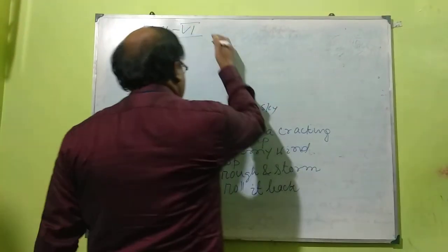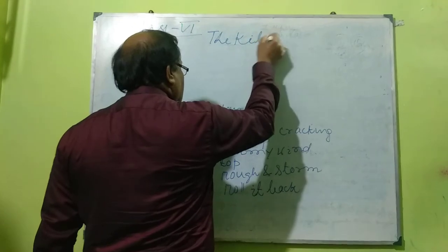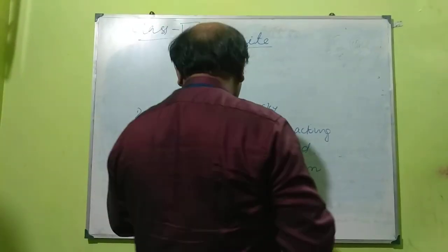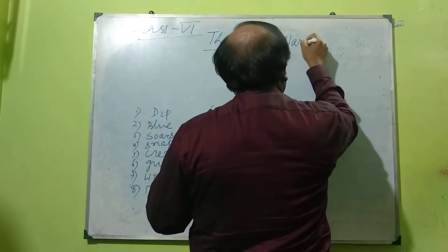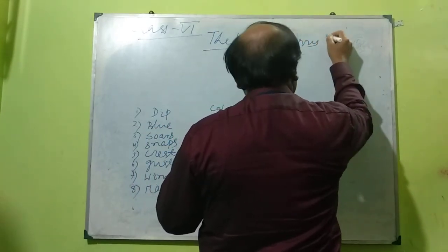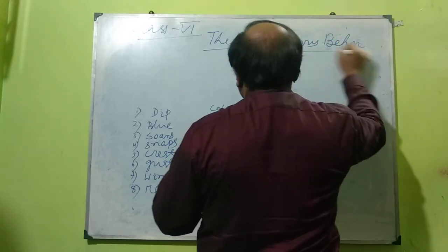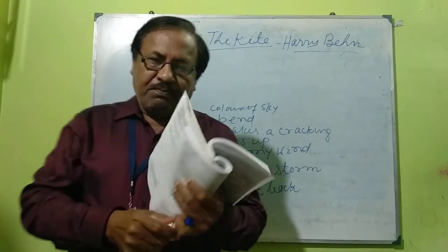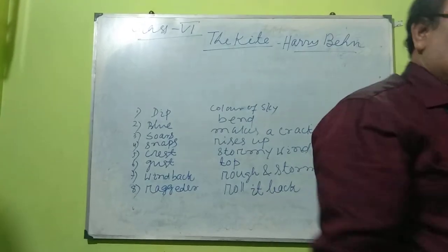This is the poem. The poet is Harry Behn. The poem is called 'The Kite.' Do you enjoy flying kites? Kites are made of colored paper.